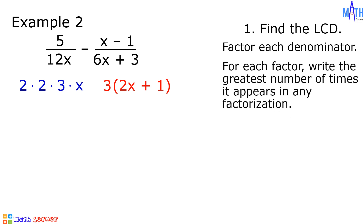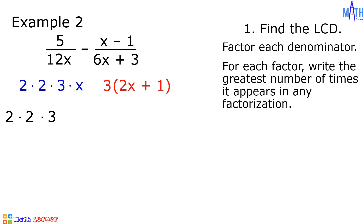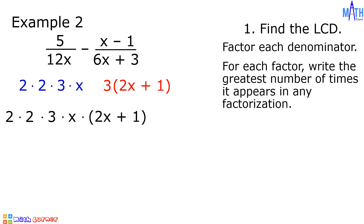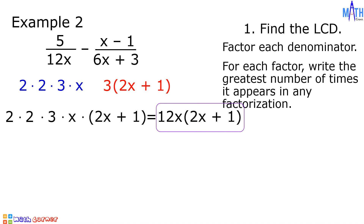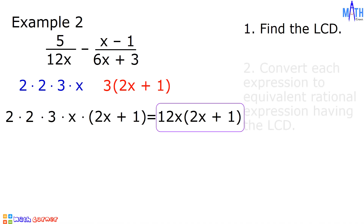For each factor, let us write the greatest number of times it appears in any factorization. 2 appears twice, so we have 2 times 2. 3 appears once in both factorizations, so the greatest number of times it appears is once. x appears once and 2x plus 1 appears once. Since 2 times 2 times 3 is 12, and 12 times x is 12x, then we have 12x times quantity 2x plus 1. Let us leave the LCD in factored form. And this is the LCD: 12x times quantity 2x plus 1.